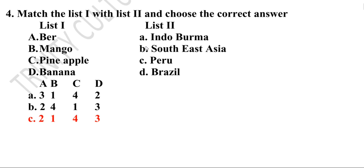Fourth question: Match list one with list two and choose the correct answer. Bear is native of Southeast Asia; mango — Indo-Burma; pineapple — Brazil; banana — Peru. The correct answer is option C: two, one, four, three.